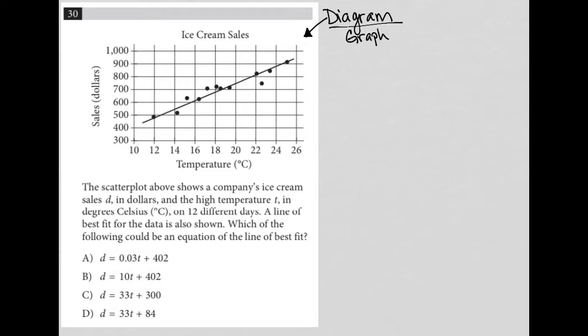We see that the x-axis is temperature. The y-axis is sales in dollars. And the topic here is ice cream sales.